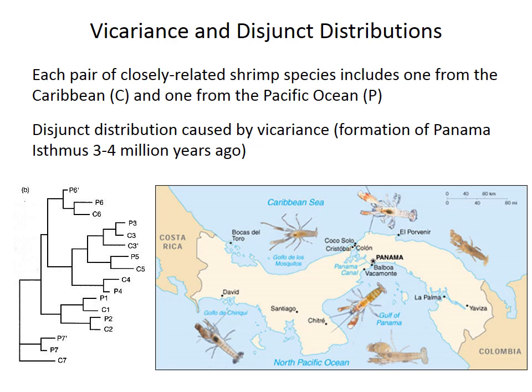This study uses DNA, so all the species in the cladogram are living, but the prediction we would make is that each species pair — C1 and P1, C2 and P2 — evolved from an ancestor that was more widely distributed in the past.